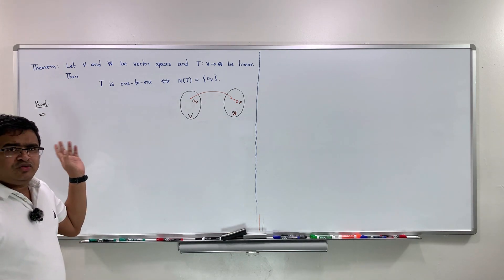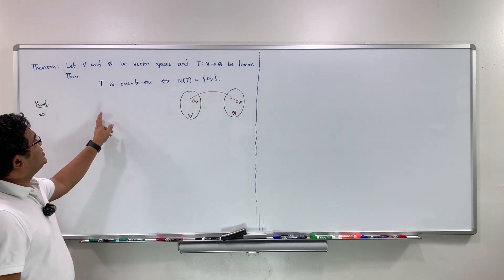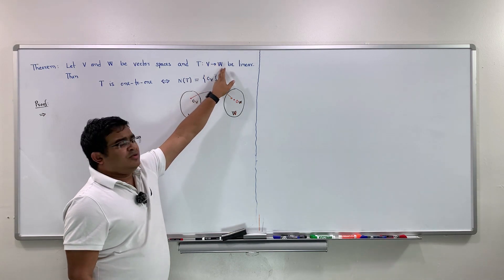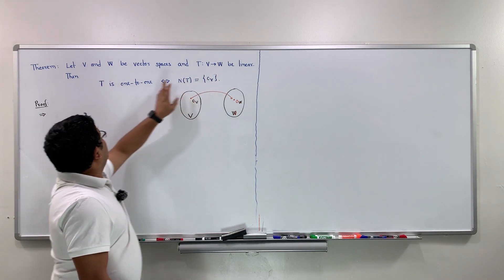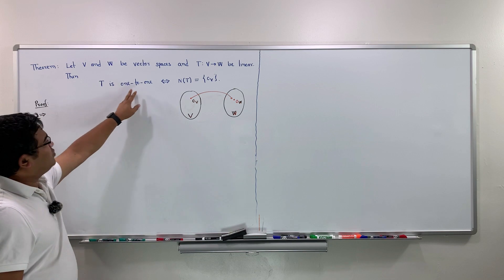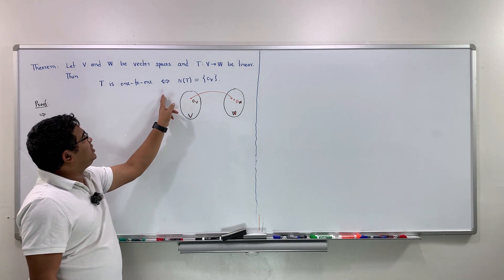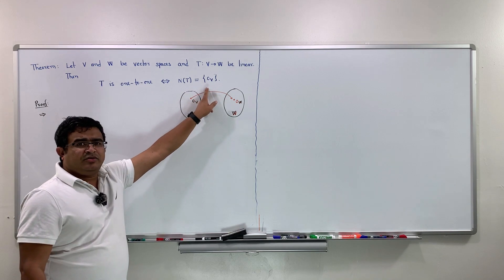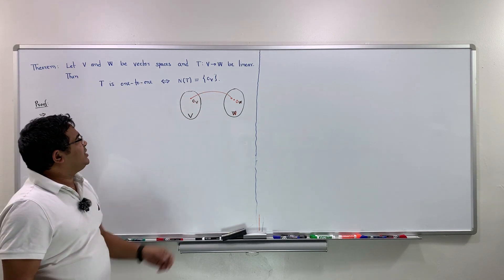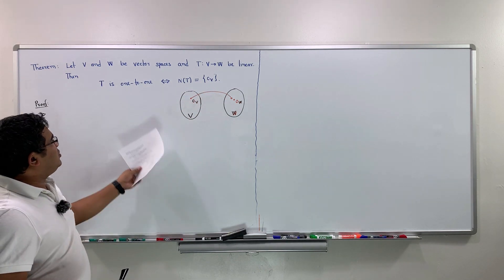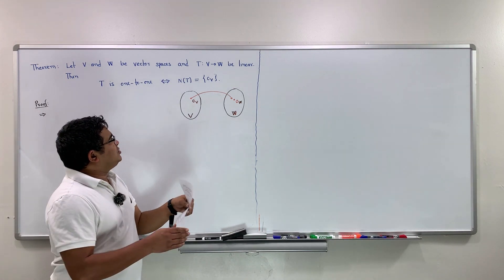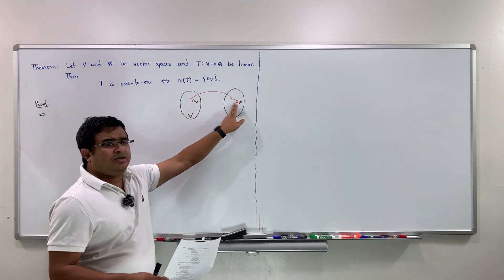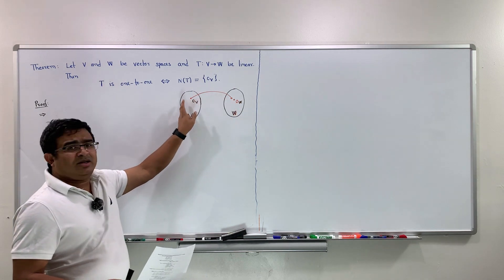If V and W are two vector spaces and T is a linear map from V to W, then the linear map T is one-to-one if and only if the null space of T is only the zero vector in V. That means if T is one-to-one, then the only vector from V that maps to the zero vector in W is the zero vector.